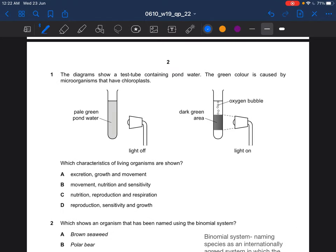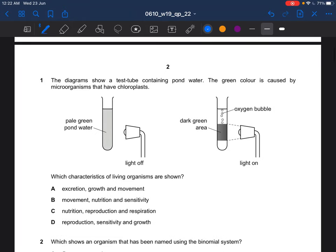First question. The diagrams show a test tube containing pond water. The green colour is caused by microorganisms that have chloroplasts. Which characteristics of living organisms are shown?